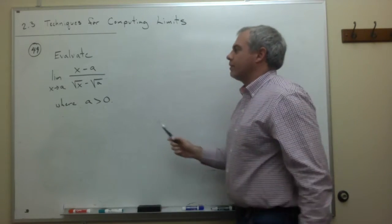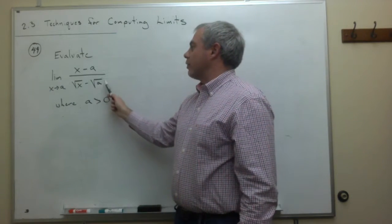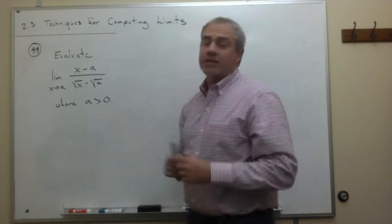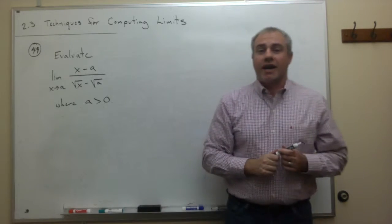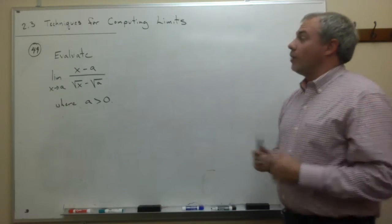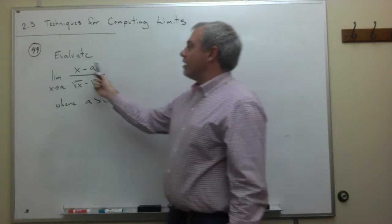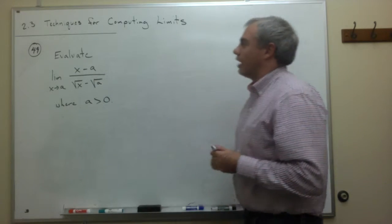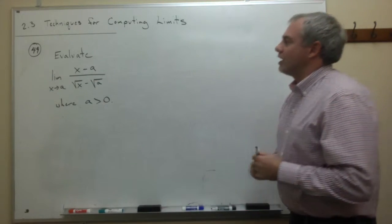And the main reason we need a to be positive here is because if we have the square root of a on the bottom and a was negative, that would not be a happy thing. So what we want to do here is very similar to what we've done in the past.